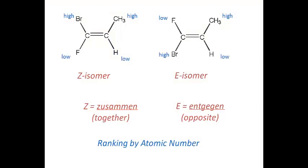Take a look at these two molecules. We've got four different atoms attached to the carbon-carbon double bond, so it really wouldn't be possible to call either one of them cis or trans — and yet they are different isomers and we need a different name for them. The more formal alternative to cis and trans is to use a capital E or Z in front of the name. What we are doing, shown here in blue, is ranking the atoms attached to the carbons of the double bond by atomic number.